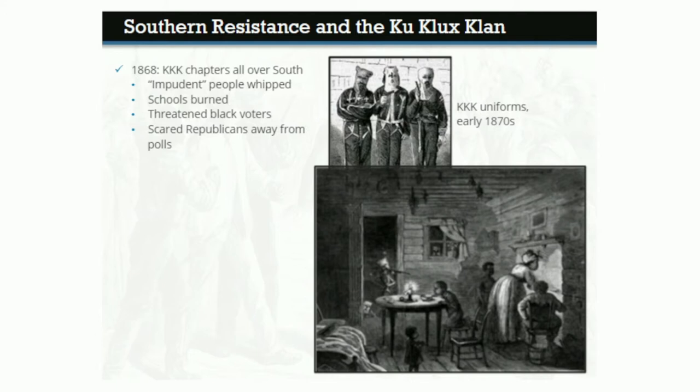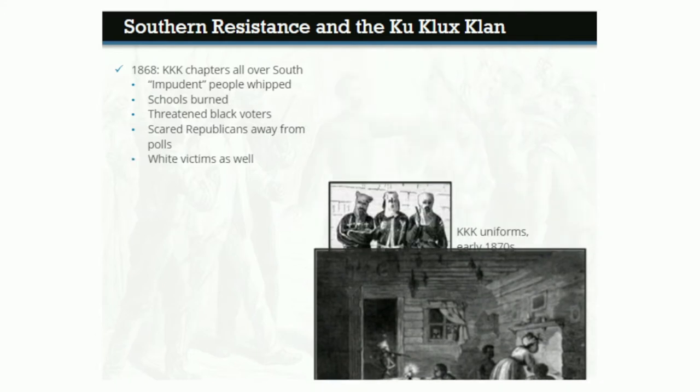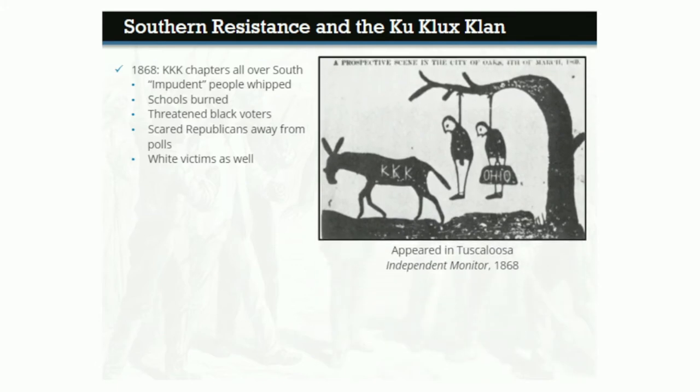Whites were victims as well as blacks. This cartoon, which appeared in an Alabama newspaper in 1868, predicts what might happen on March 4th of the following year — the day that new Republican congressmen were set to begin their terms. Two white men hang from a tree; one clutches a carpetbag labeled Ohio. Note that the KKK is symbolized by a donkey, the traditional symbol of the Democratic Party.